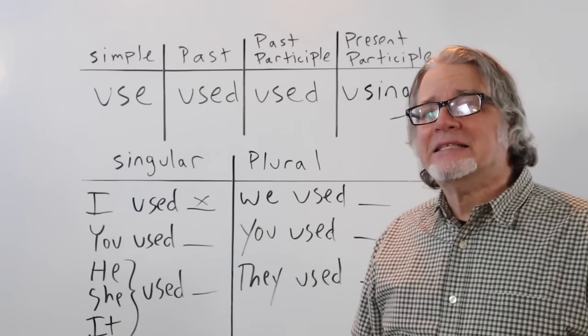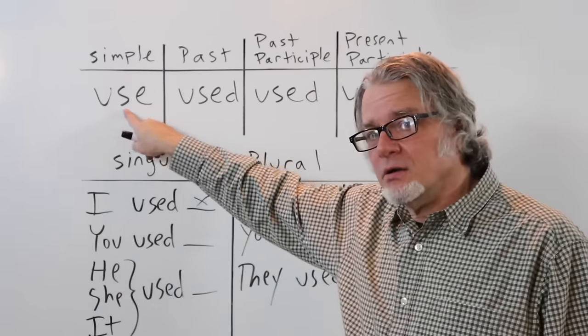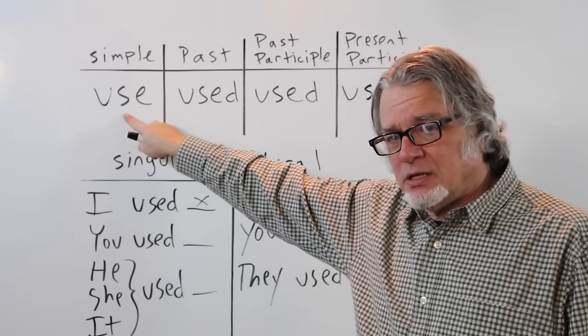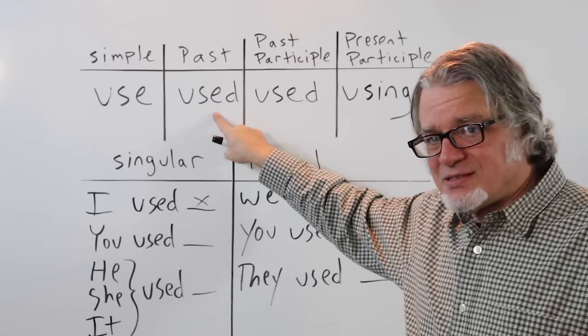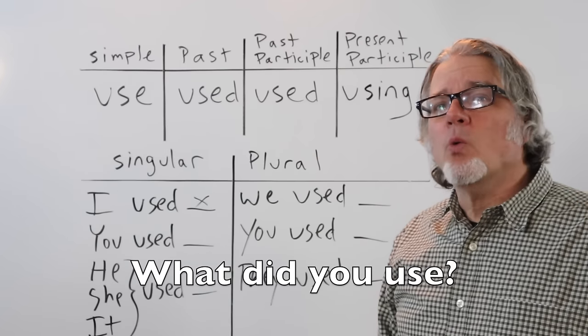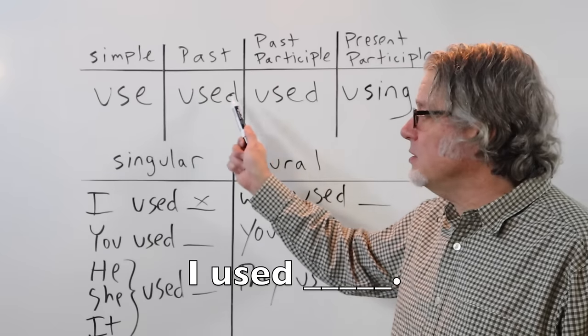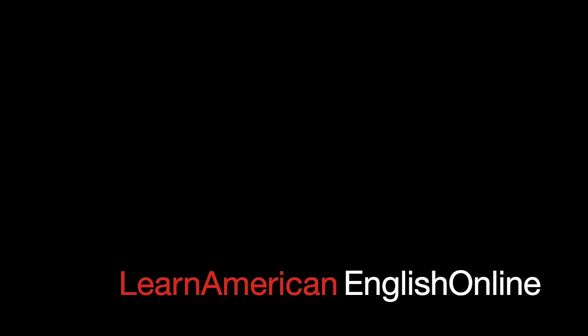So, in my question, what did you use? This is the form of the verb that's in that question. And in your answer is this, used. What did you use? I used, and then the object. What did you use?